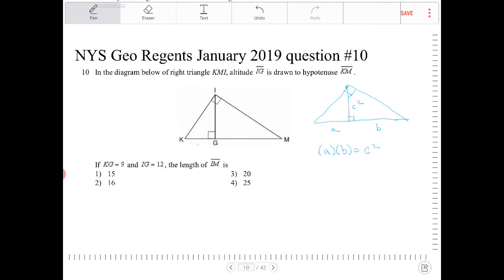So if KG is equal to 9 and IG is equal to 12, and you're asked to find out what IM is, that's this guy right here, which I'm going to call X, how are we going to do that?